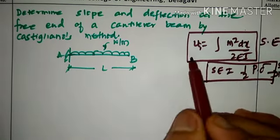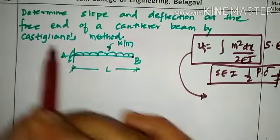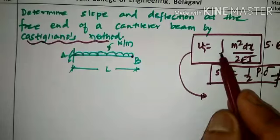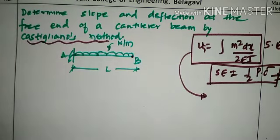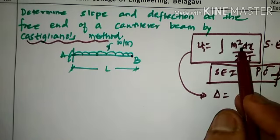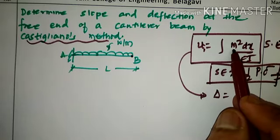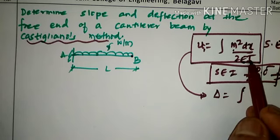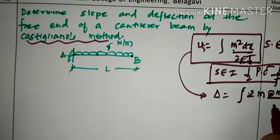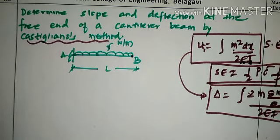We are going to use this strain energy expression to find out slope and deflection at the free end of the cantilever beam by Castigliano's method. The deflection delta at any position is the partial differentiation of strain energy with respect to load. When I partially differentiate M², since 2EI is constant, I get 2M (∂M/∂P) divided by 2EI — this is the expression for deflection.